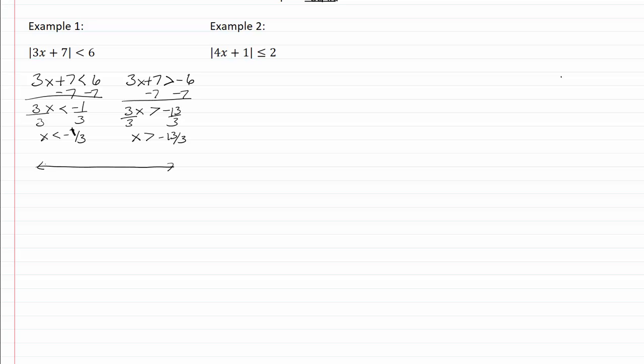So on our graph, we've got negative thirteen-thirds is down here, negative one-third is here, and it says the x is less than negative one-third. So we'll have an open dot at negative one-third.